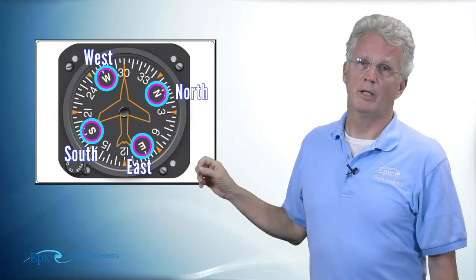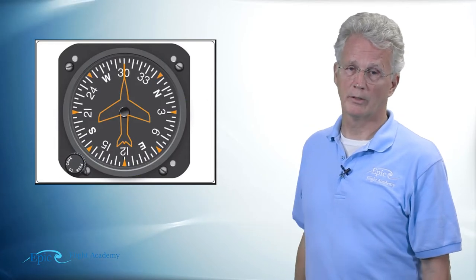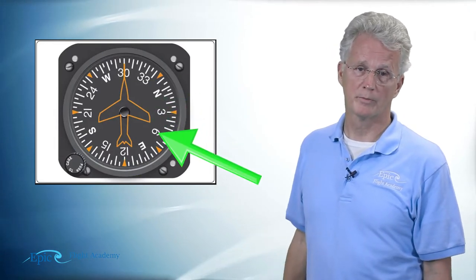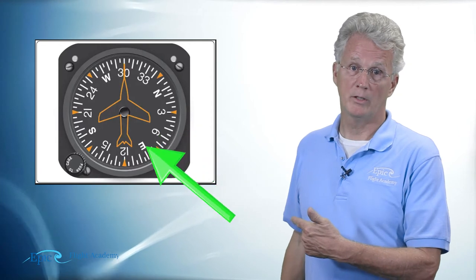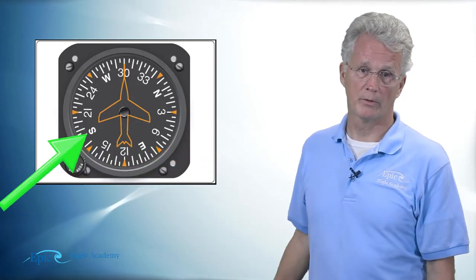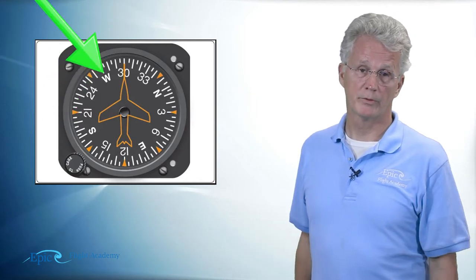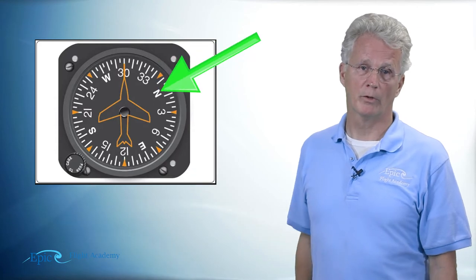The big numbers are every 30 degrees, so take a look: 3, 6, E is east, 12, 15, S is south, 21, 24, W is west, 30 and 33 and back to north.